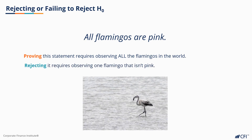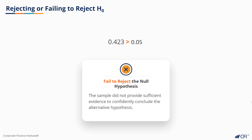Or to use a quote attributed to Albert Einstein: no amount of experimentation can ever prove me right; a single experiment can prove me wrong. So while our sample wasn't able to reject the null hypothesis, it also wasn't able to prove it. The only way we could prove it is by testing the entire population.